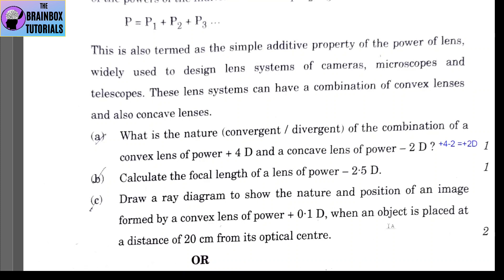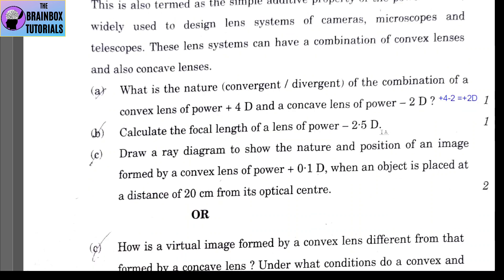Part B: calculate the focal length of a lens of power −2.5 diopter. Focal length = 1 / power = 1 / 2.5 = 10/25 = 0.4 m, or 40 cm. Since the power is negative, it is obviously a concave lens.